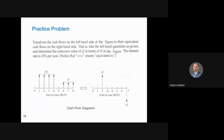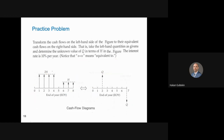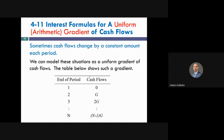This is a practice problem: there are two cash flow series H and Q, and we want to find the relation between H and Q so they are economically equivalent at a 10% interest rate. The approach is to find the present value of both series and set them equal, or find the future value of both and set them equal. Please try solving this by yourself.